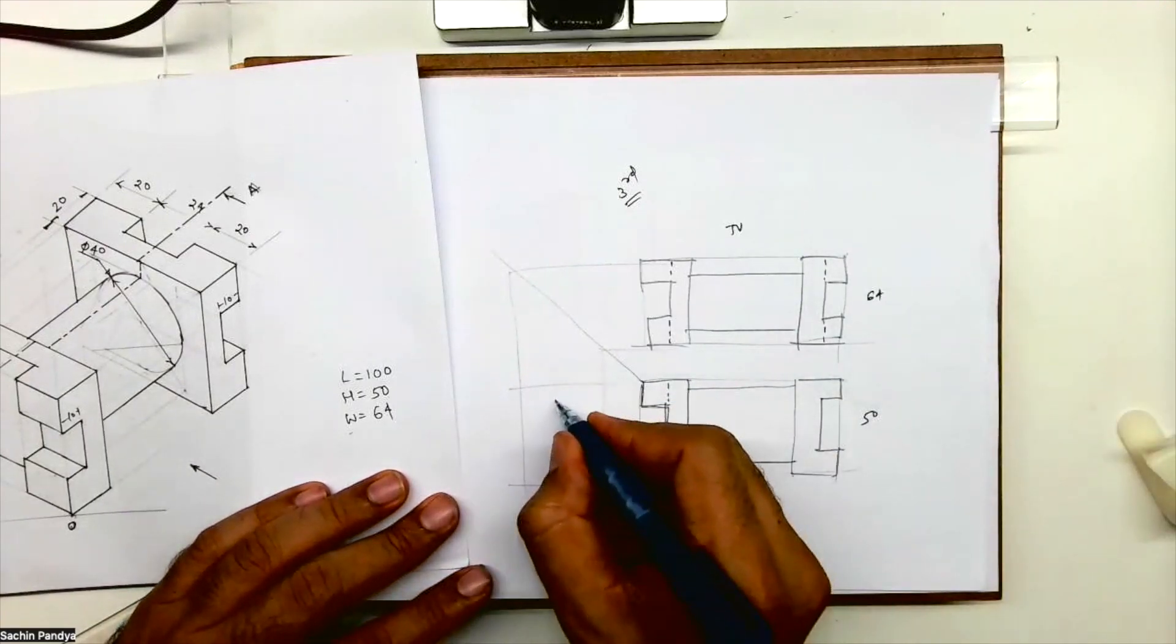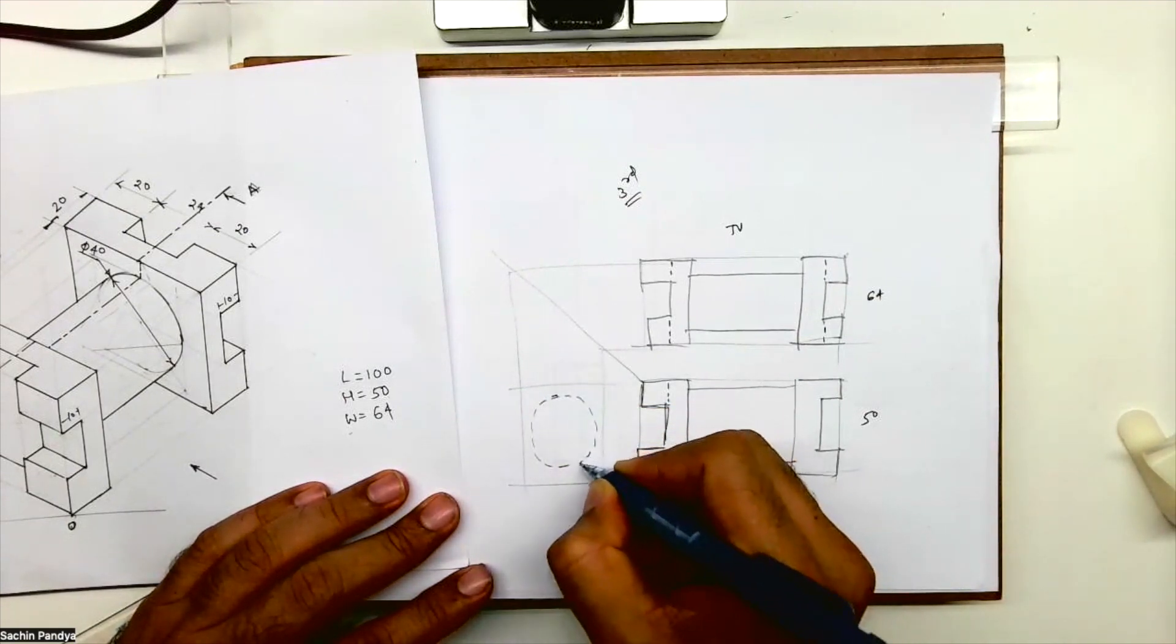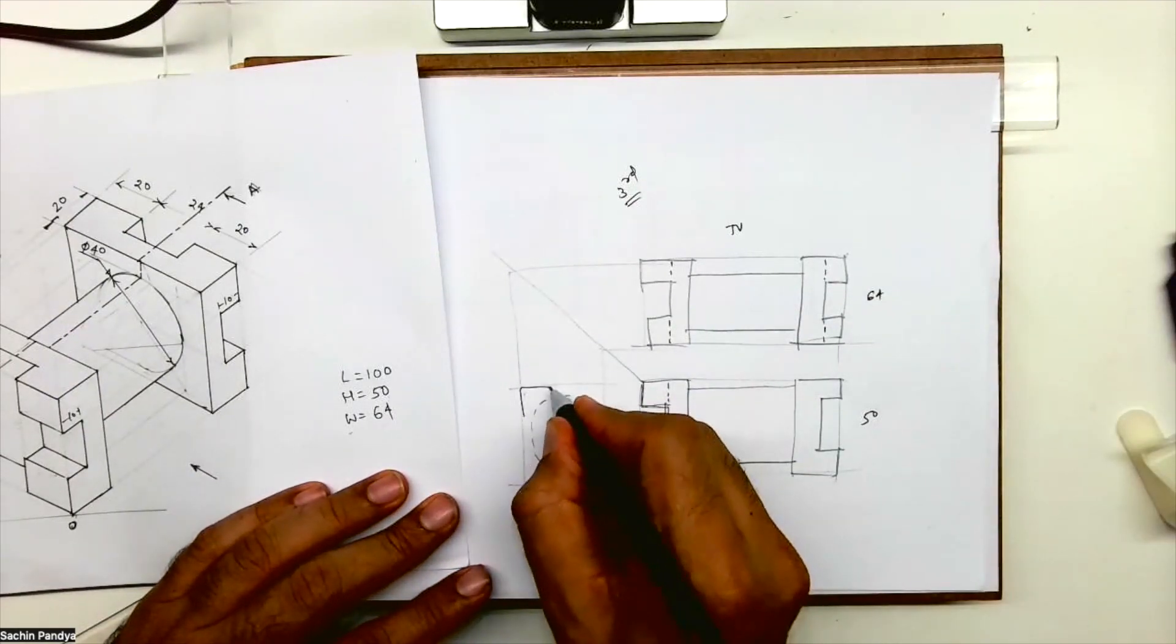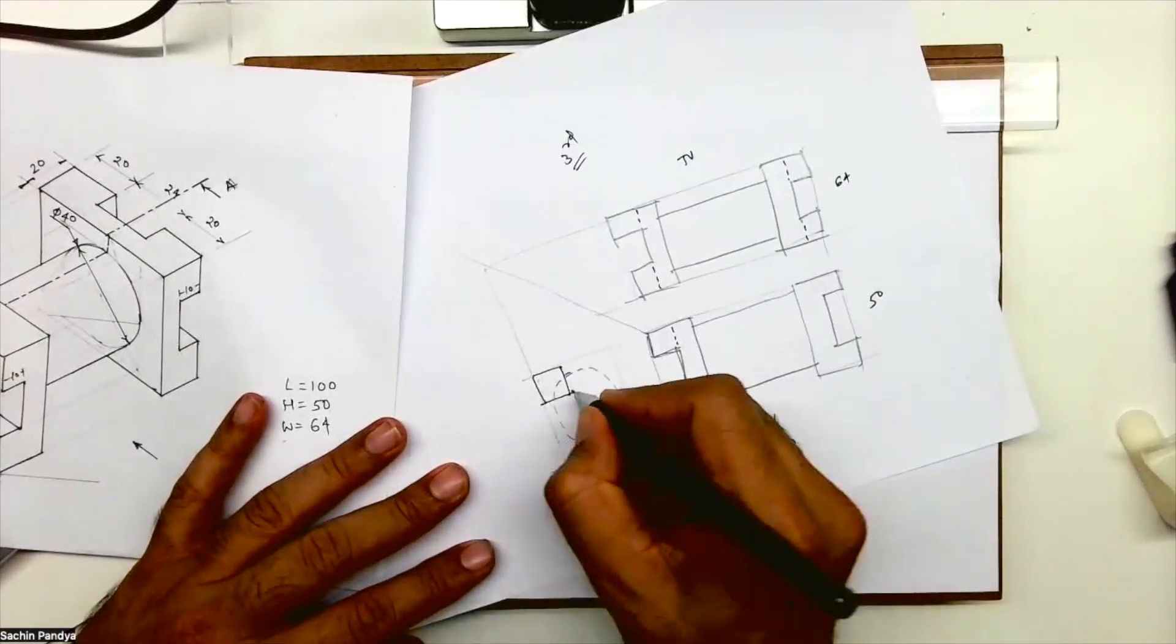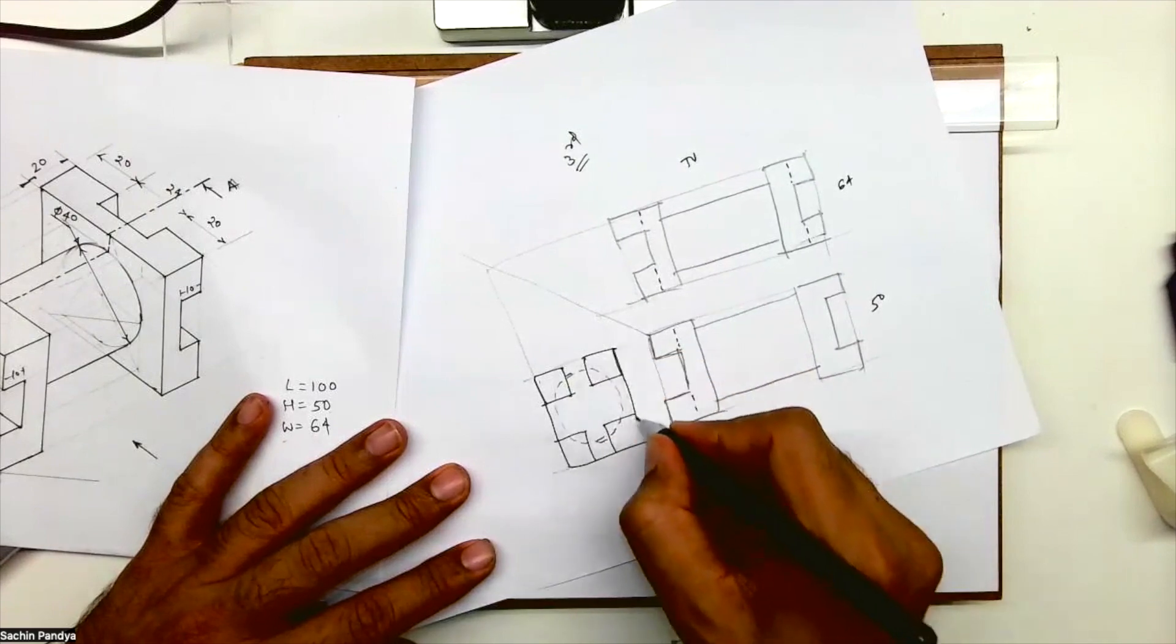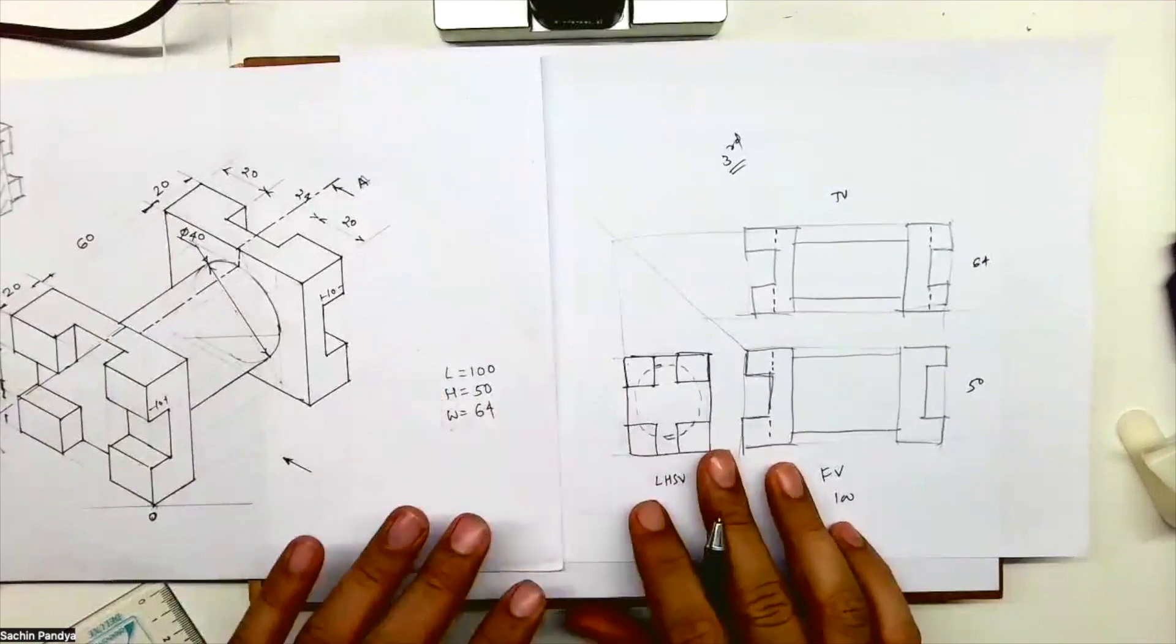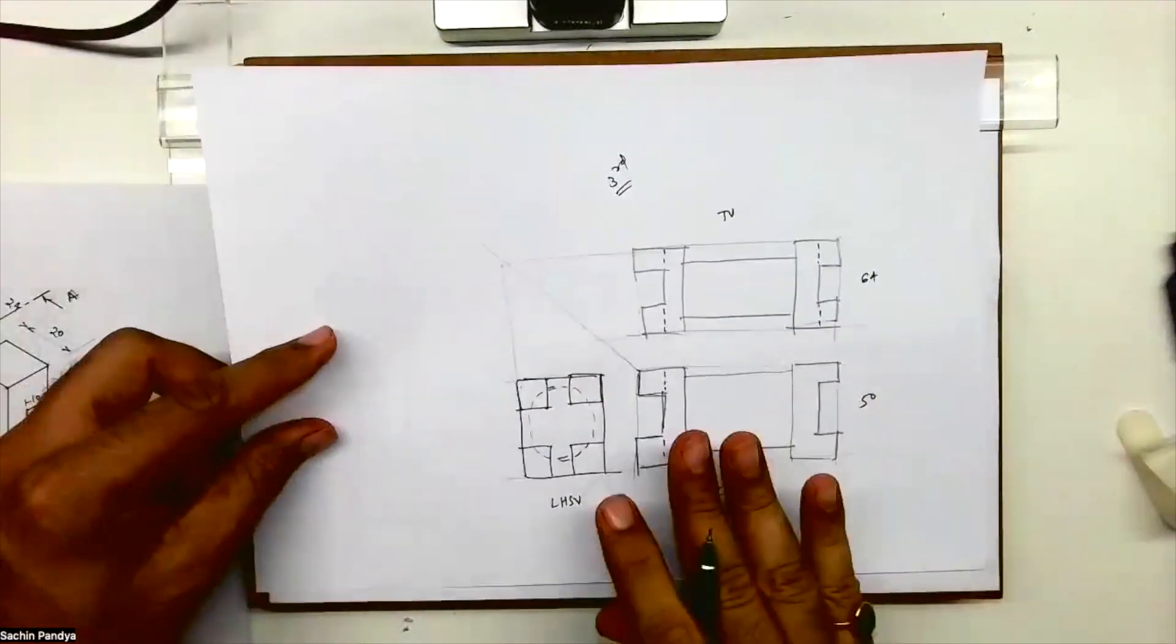And in side view you'll have dotted circle. I'm sorry it is rough, please excuse me for that. And you'll have four rectangles like this - one, two, three, and four. This is how you'll get side view, left-hand side view. So this is first angle and this is third angle. Same thing, only this is neater, this is rough.